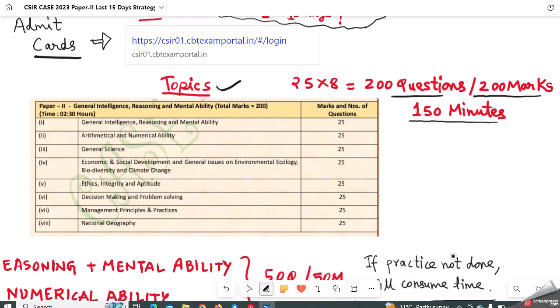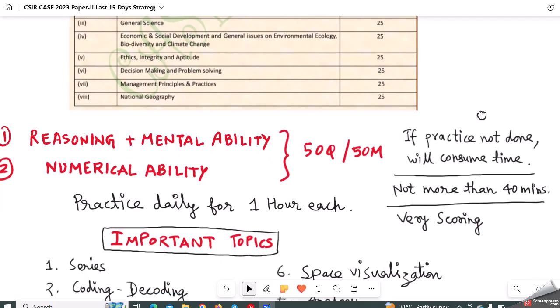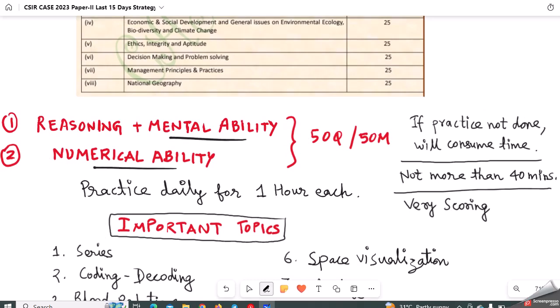If you see the topics, first two are Reasoning and Numerical Ability - Intelligence Reasoning and Mental Ability 25 questions, and Arithmetical and Numerical Ability 25 questions. Understand that there will be total of 50 questions for 50 marks. This will be the stronger side of mostly banking and SSC aspirants. If you have not practiced enough, it will consume your time in examination. You should not devote more than 40 minutes to both these sections.